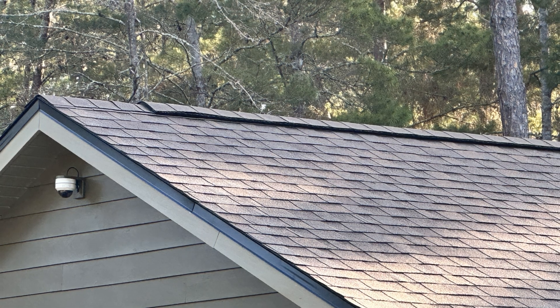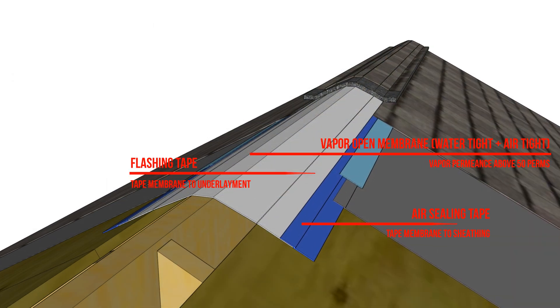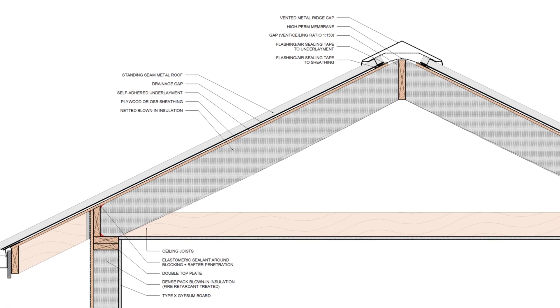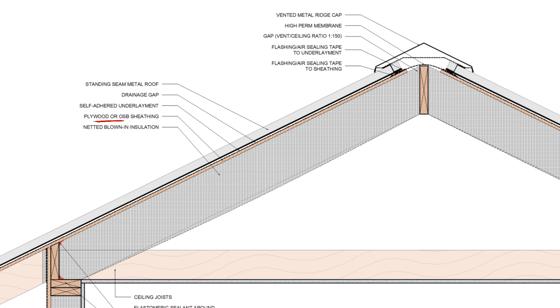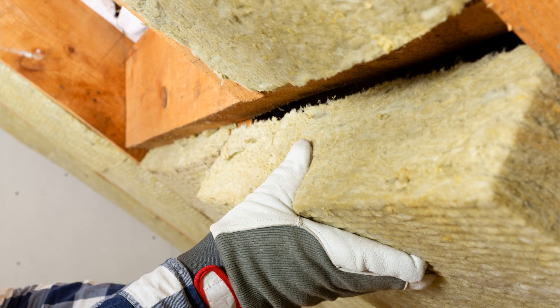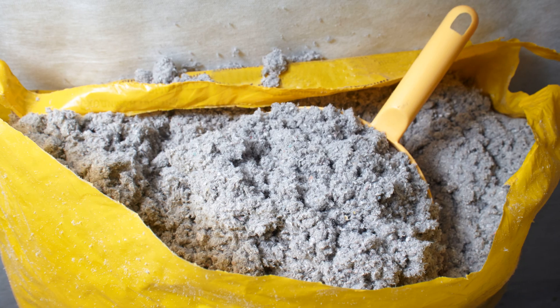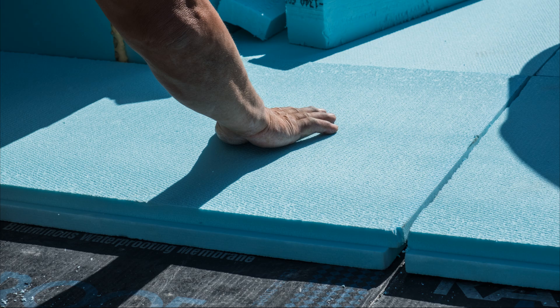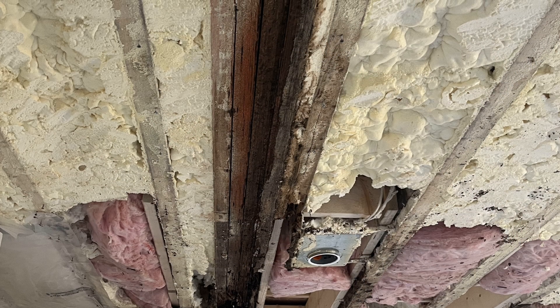We can also use a vapor diffusion port in warmer climates to passively assist with the removal of moisture around the ridge. This is in addition to conditioning the attic space, but this strategy allows us to use fibrous insulation materials in isolation like fiberglass, mineral wool, and cellulose, which can be substantially more affordable than installing exterior rigid insulation and less risky than using spray foam.